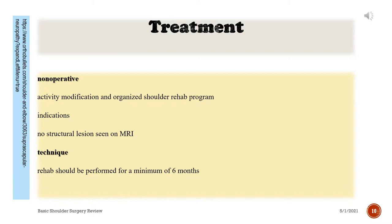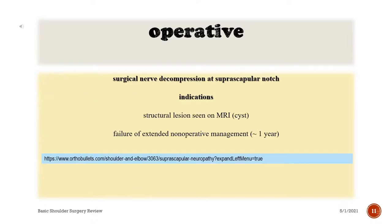Non-operative treatment includes activity modification and an organized shoulder rehabilitation program. Indication: no structural lesion seen on MRI. Rehabilitation should be performed for a minimum of six months. Operative treatment involves surgical nerve decompression at the suprascapular notch, indicated when a structural lesion is seen on MRI, a cyst is present, or there is failure of extended non-operative management of approximately one year.